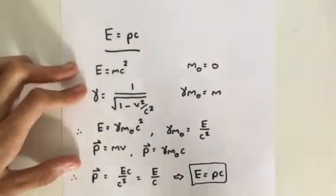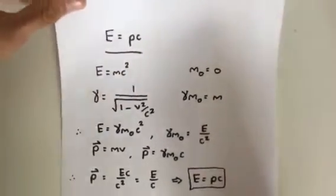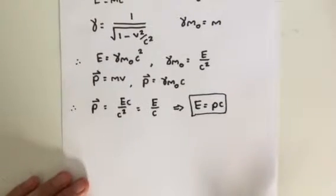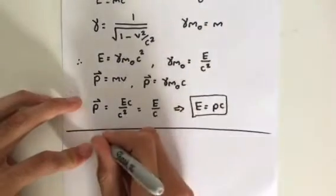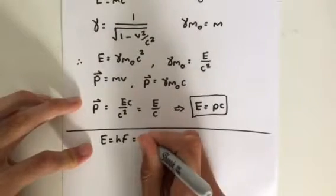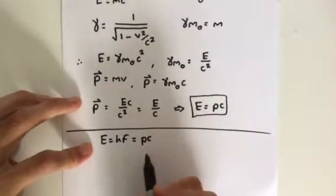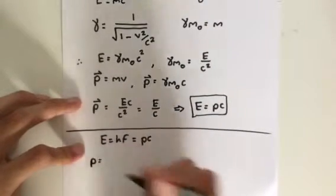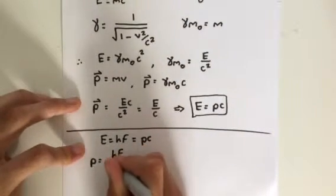So there's the proof using our Lorentz factor and E equals MC squared. The next part was to use this equation and E equals HF to prove or to calculate the wavelength of a photon. So E equals HF, therefore, must equal PC. So we can rearrange this equation to get P equaling HF divided by C.